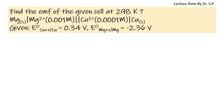We have a question: find the EMF of the given cell at 298 Kelvin. Given electrode potential of copper is 0.34 volts and electrode potential of magnesium is minus 2.36 volts. Solution: applying the Nernst equation, we get EMF of